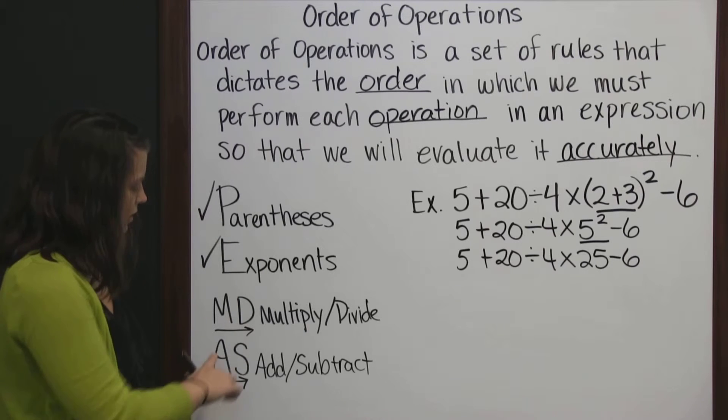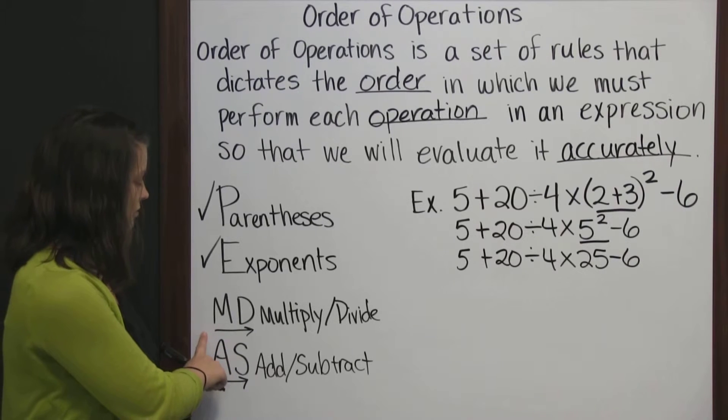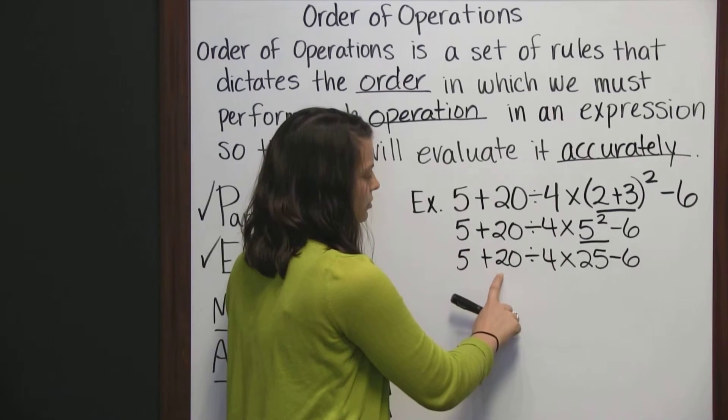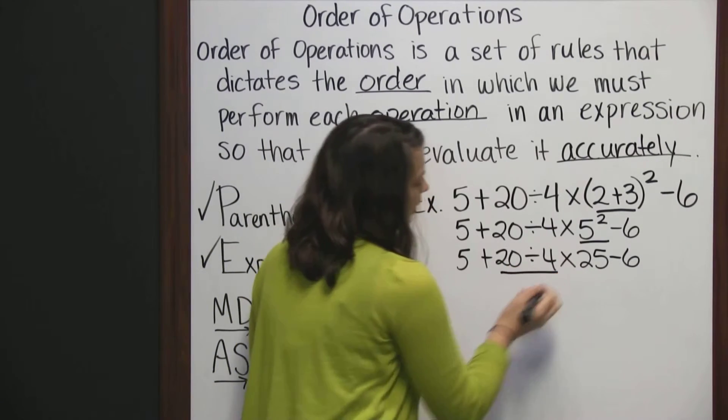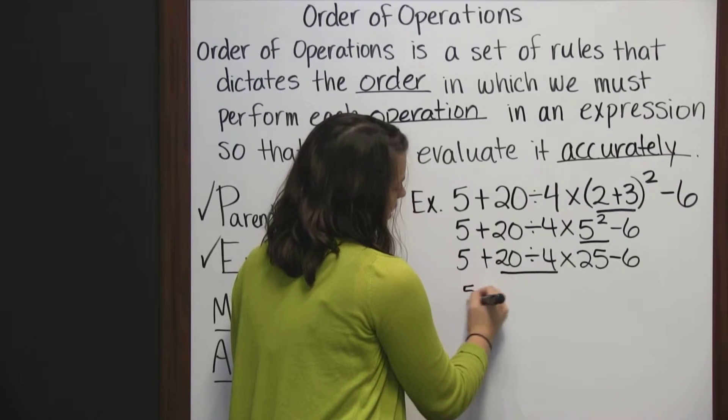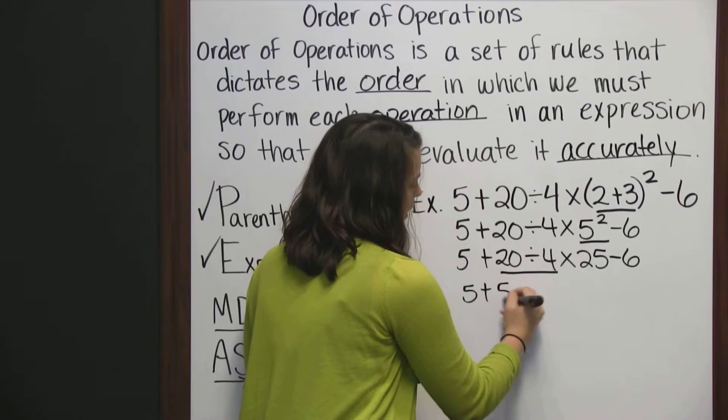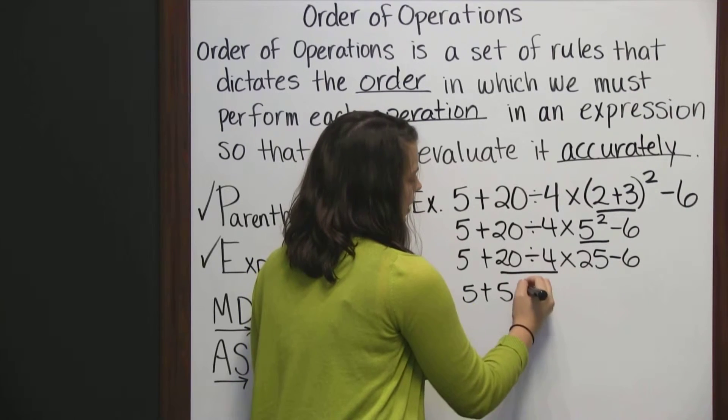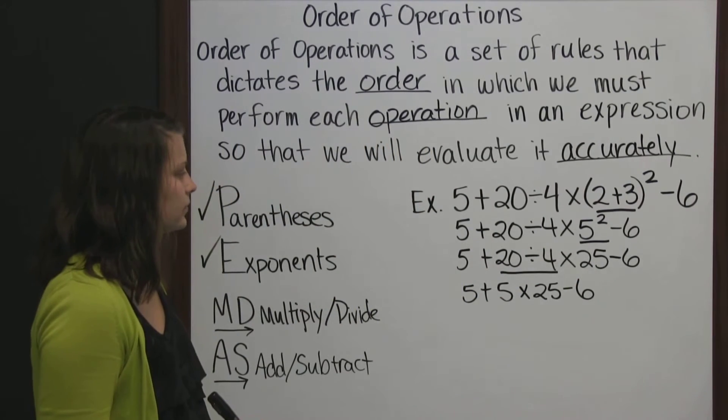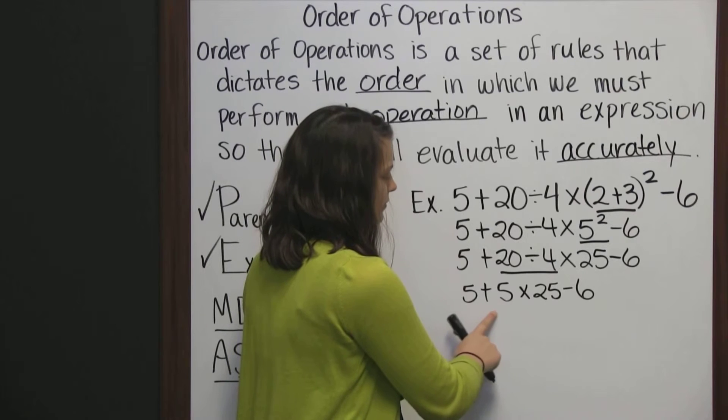And we go back to our order of operations. We've done all of our exponents. So now we're moving on to multiplication and division, again from left to right. So we start on the left and work our way right looking for multiplication and division and we find it. Which means we need to divide first, not multiply. So we have 5 plus 20 divided by 4 is 5 times 25 minus 6. So we've done our division.